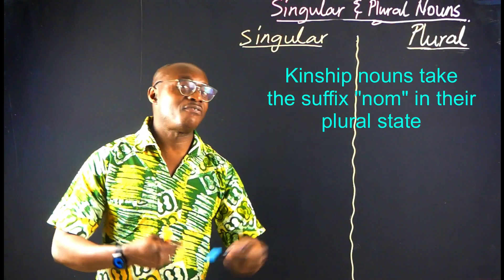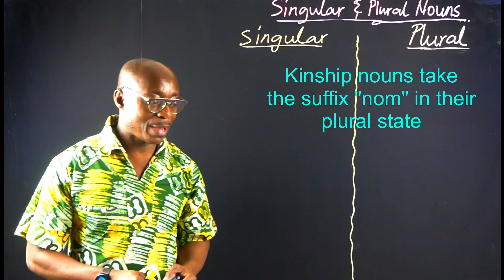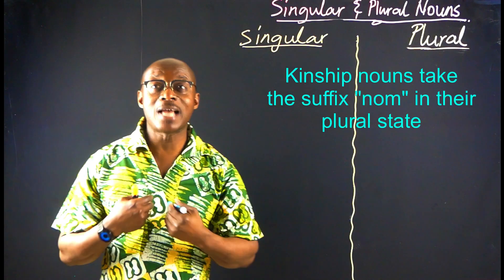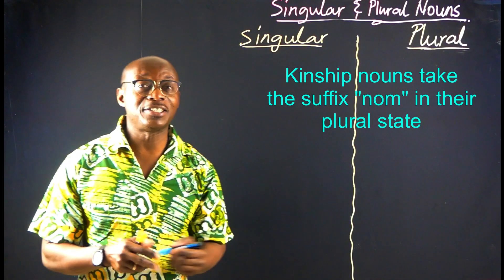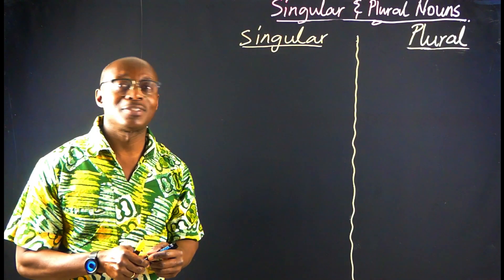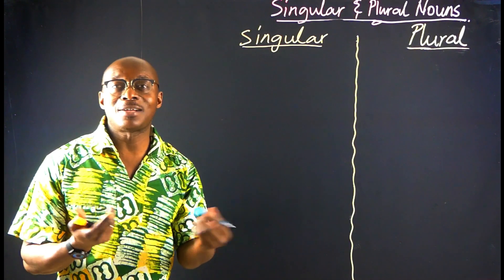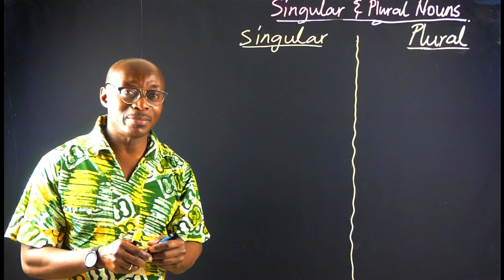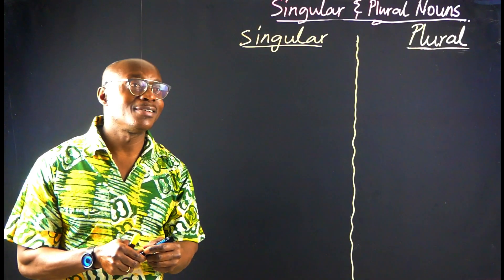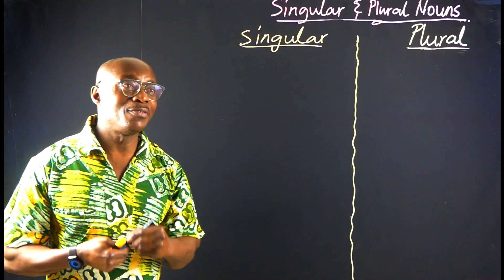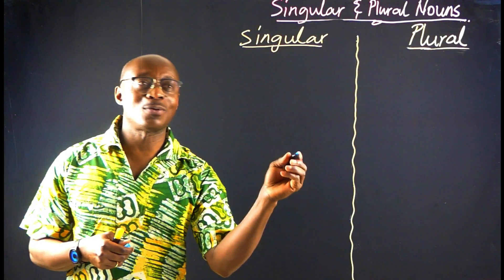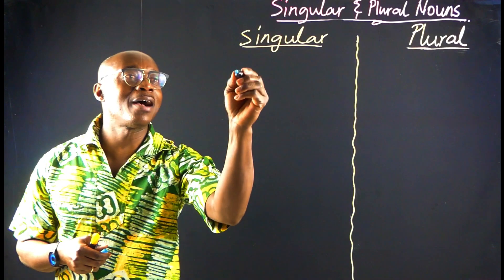Let's take the first person — that will be our blood relation, what we call brothers and sisters, siblings. So in Chi, you write siblings as Nya.